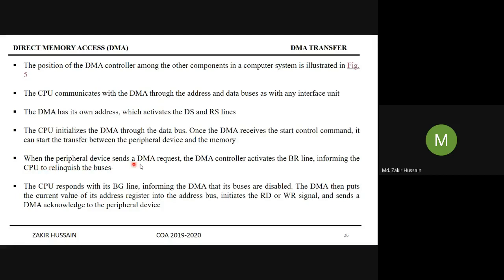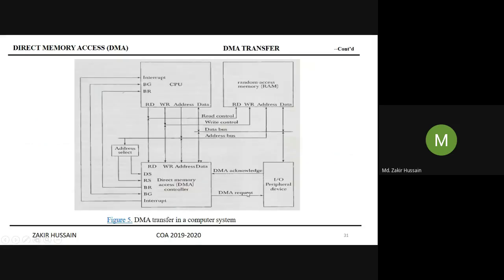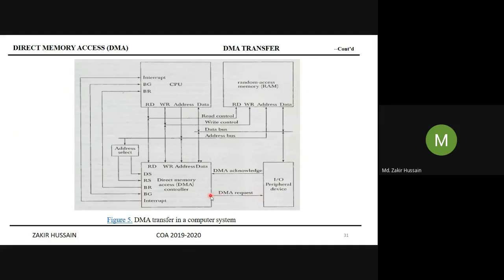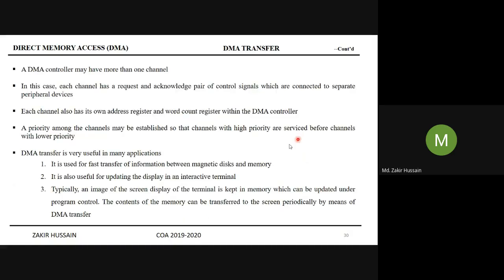When the peripheral device sends a DMA request, the DMA controller activates the BR (bus request) line. Note: in the figure, the DMA request arrow should point from the I/O device to the DMA, since the I/O device is requesting the DMA. Once the DMA accepts this request, it conveys acknowledgment to the I/O device through the DMA acknowledge signal — so that arrow should point from DMA to the I/O device.